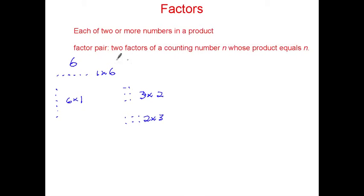There's different ways that you can represent this, and the one that I like to use the best is, I call it a factor T. 1 times 6 is 6, and 2 times 3 is 6, and I like to go in order putting the smaller number on the bottom.